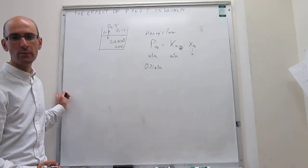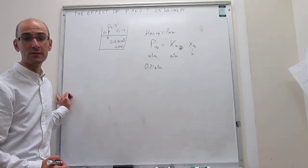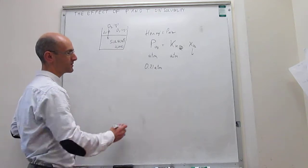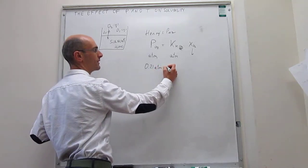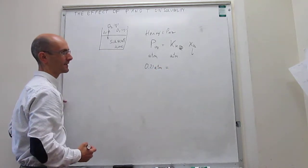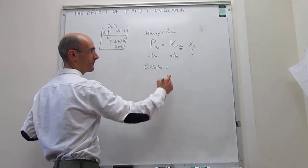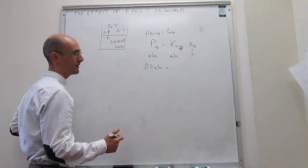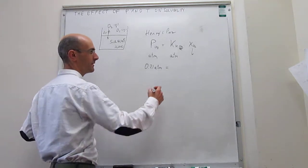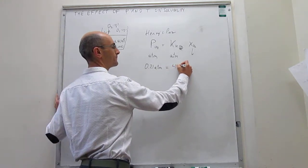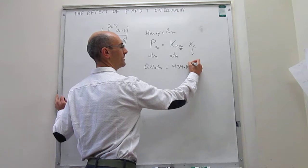About 21% of our atmosphere is oxygen, so that means that the partial pressure of oxygen is about 0.21 atm at sea level. Now, Henry's constant for oxygen in water at 298 Kelvin is 4.34 times 10 to the 4 atm.